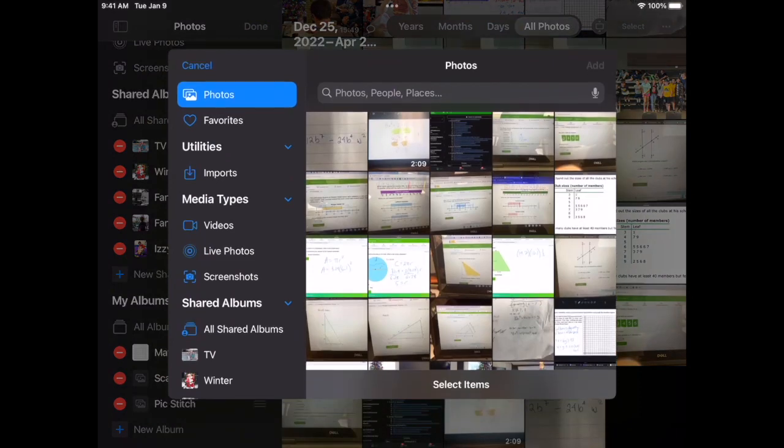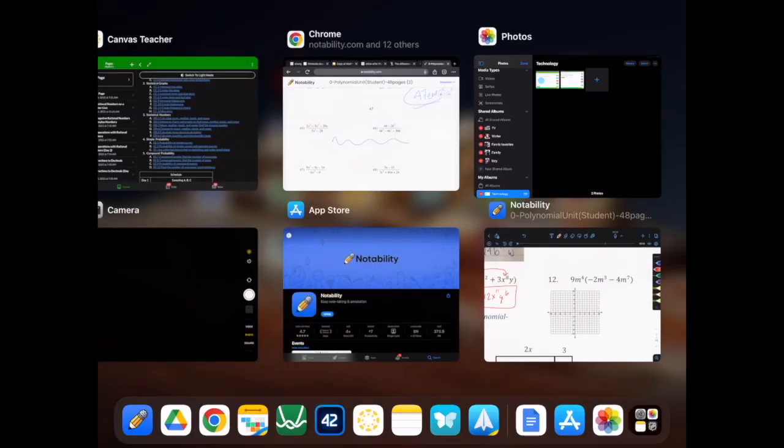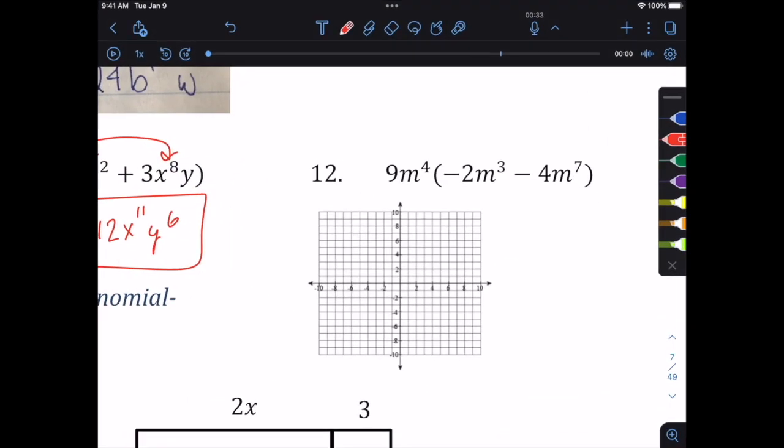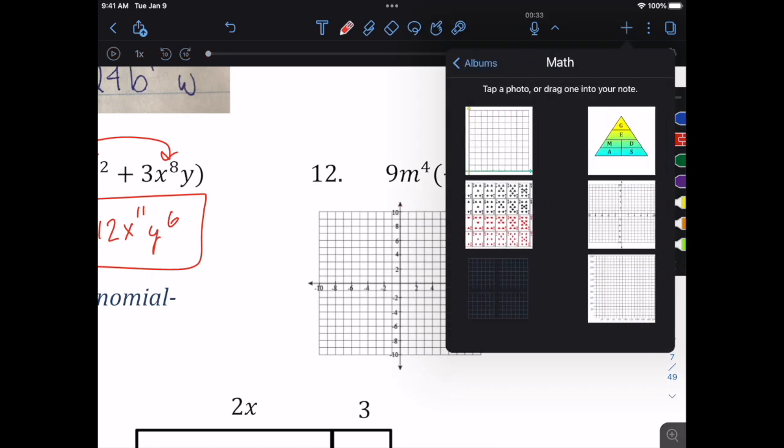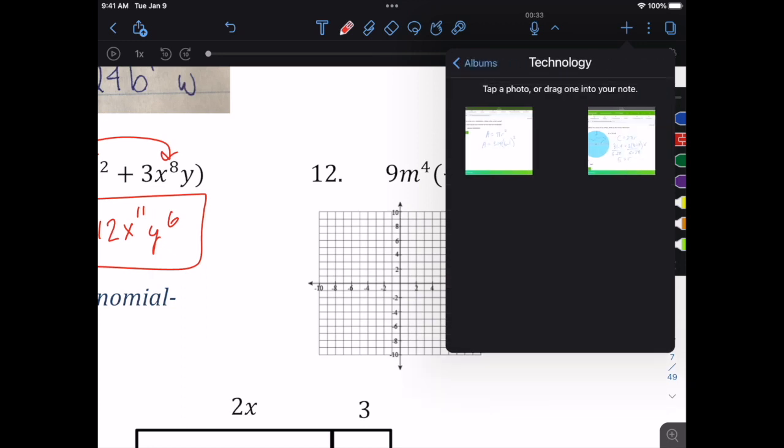So now I can pick photos that are going to go in there if I have them already, or I can later add them there. But now I've got a folder called technology. I come back over here to Notability. When I click on add, it put me back in that folder, so I'm going to go back and now I see this technology folder and I can add this picture if I wanted.